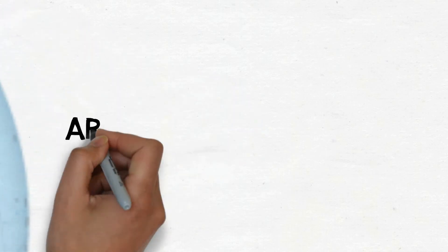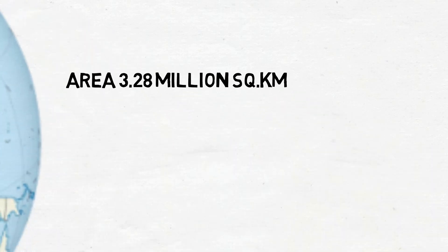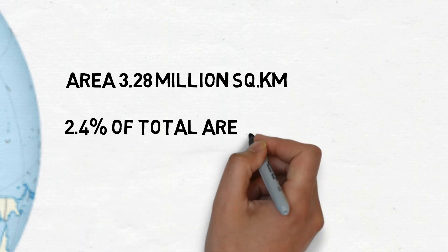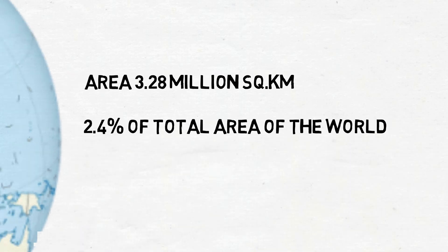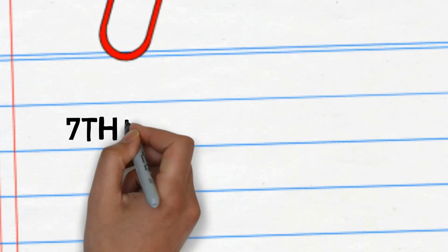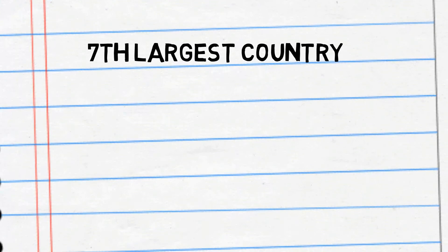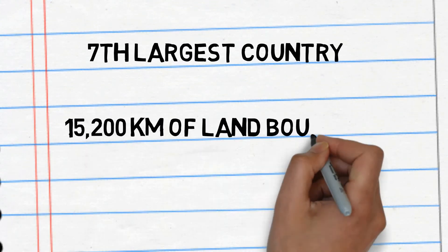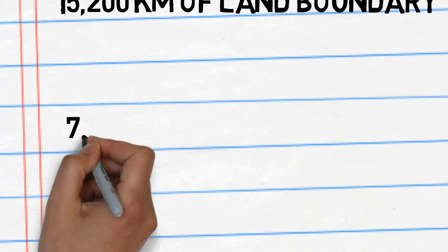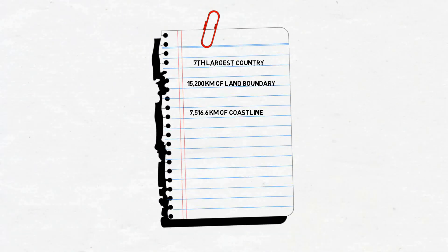India has an area of 3.28 million square kilometers. This total area accounts for about 2.4 percent of the total geographical area of the world, making it the seventh largest country in the world. It has a land boundary of about 15,200 kilometers, and the total length of the coastline of the mainland including Andaman and Nicobar and Lakshadweep is 7,516.6 kilometers.